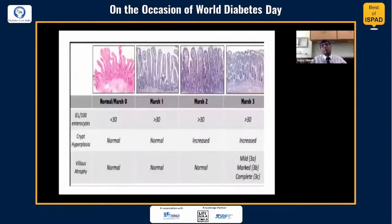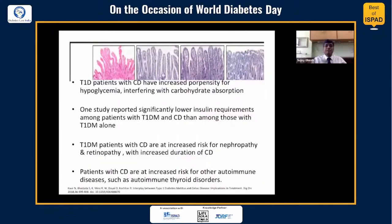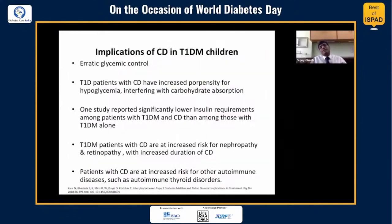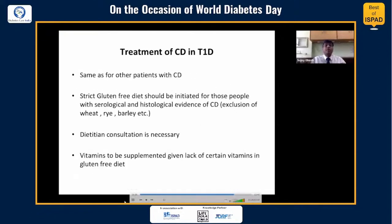If a child has celiac disease in type 1 diabetes, there is more likely to be erratic glycemic control because of the GI problems. Type 1 diabetes with celiac has an increased propensity for hypoglycemia interfering with carbohydrate absorption, and there may be significantly lower insulin requirements among children with both type 1 and celiac compared to type 1 alone. Type 1 with celiac is at greater risk of nephropathy and retinopathy, particularly with increased duration of celiac disease. Celiac is also associated with an increased risk of other autoimmune diseases such as autoimmune thyroid disorder.